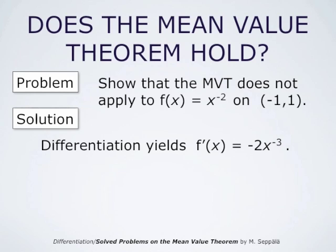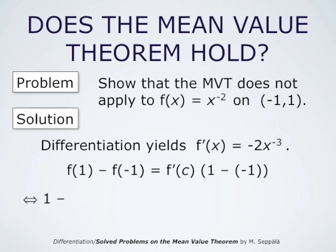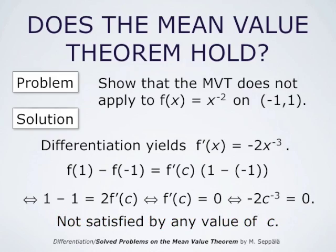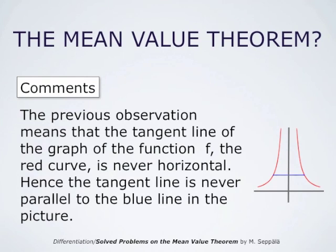Differentiation yields that f'(x) equals minus 2 times x to the power minus 3. Now f(1) minus f(-1) equals f'(c) times (1 minus (-1)) becomes 1 minus 1 equals 2 times f'(c), so 2 times f'(c) equals 0, meaning f'(c) equals 0. But f'(c) equals minus 2 times c to the power minus 3, which is never 0 for any finite value of c. Therefore the statement of the mean value theorem is not satisfied by any finite c, meaning the tangent line to the graph is never horizontal, whereas the secant line over the interval from negative 1 to 1 for this function is horizontal — as shown by the blue line segment in this picture.